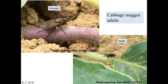Cabbage maggot adults have pretty similar looks to a common housefly. However, houseflies are considered a nuisance insect, but the cabbage fly is a damaging pest to many brassica crops. Here on the top picture you see a female, and then the bottom is a male. As you see, the female is a little bit bigger than the male — there are some size differences.